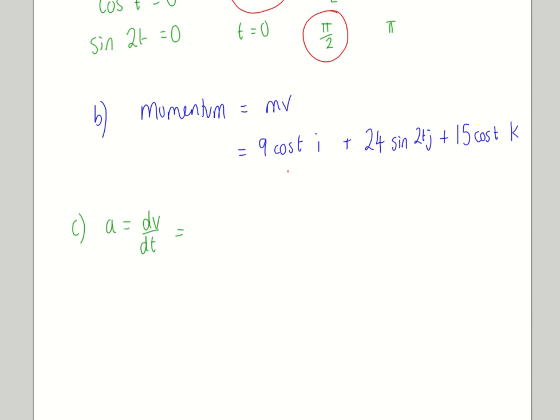And that gives us, and be careful here because you've got some signs changing. So cos going back to minus sine. So minus 3 sine t in the i direction. We've got sine going to cos and another 2 popping out in front. So we've got 16 cos 2t in the j direction. And then we've got cos going to minus sine. So there is a change of sign here. We'll go to minus 5 sine t in the k direction. That's a.